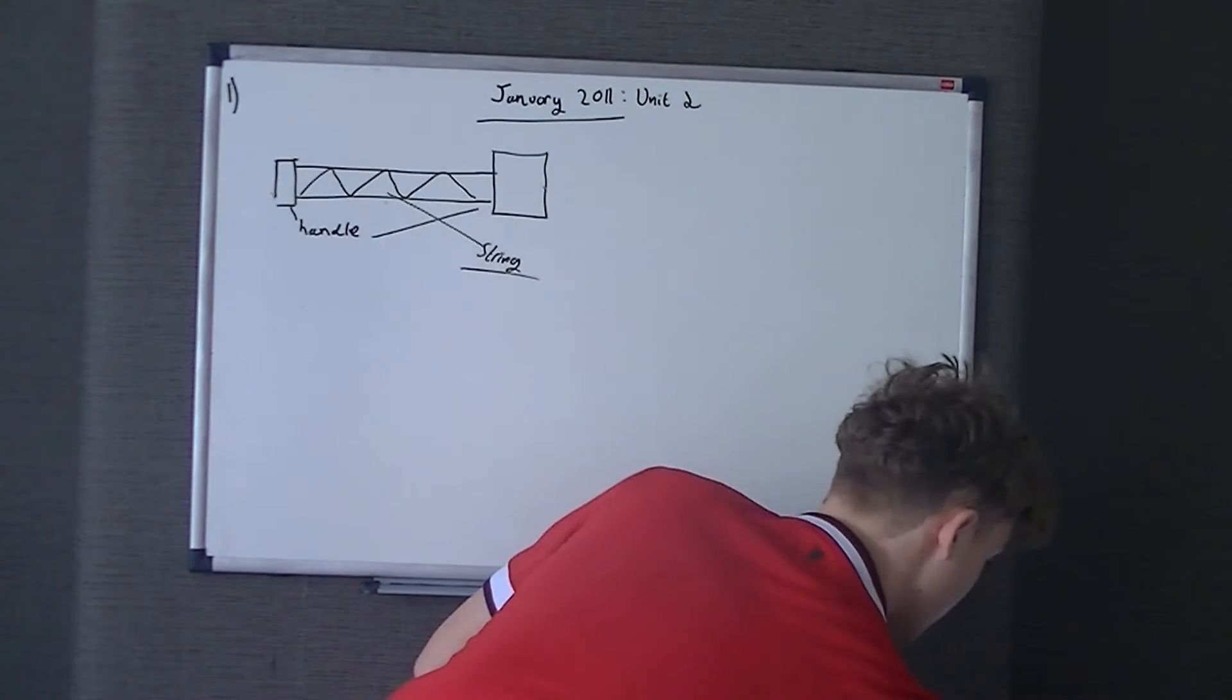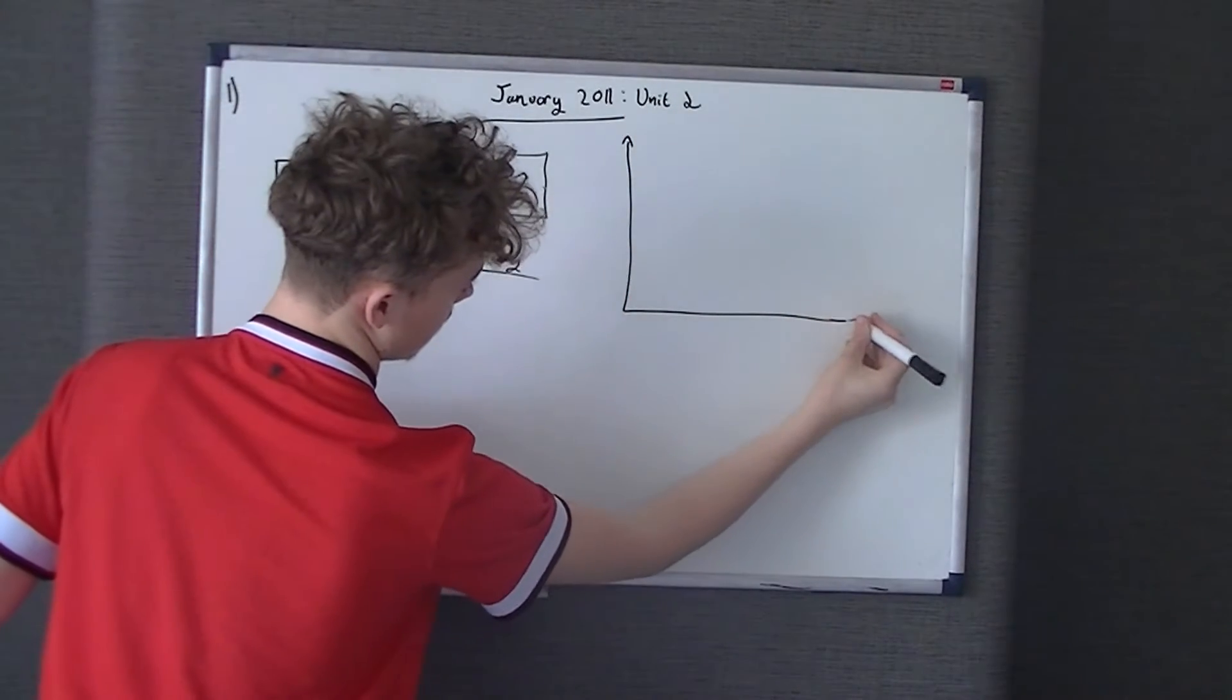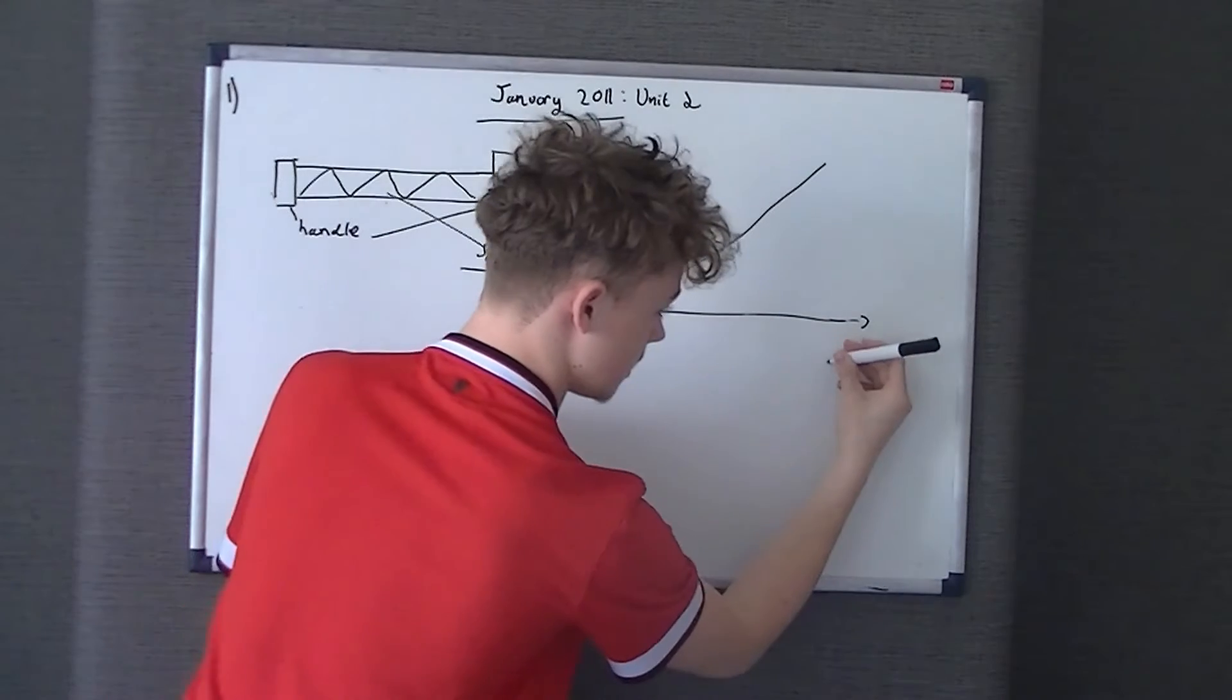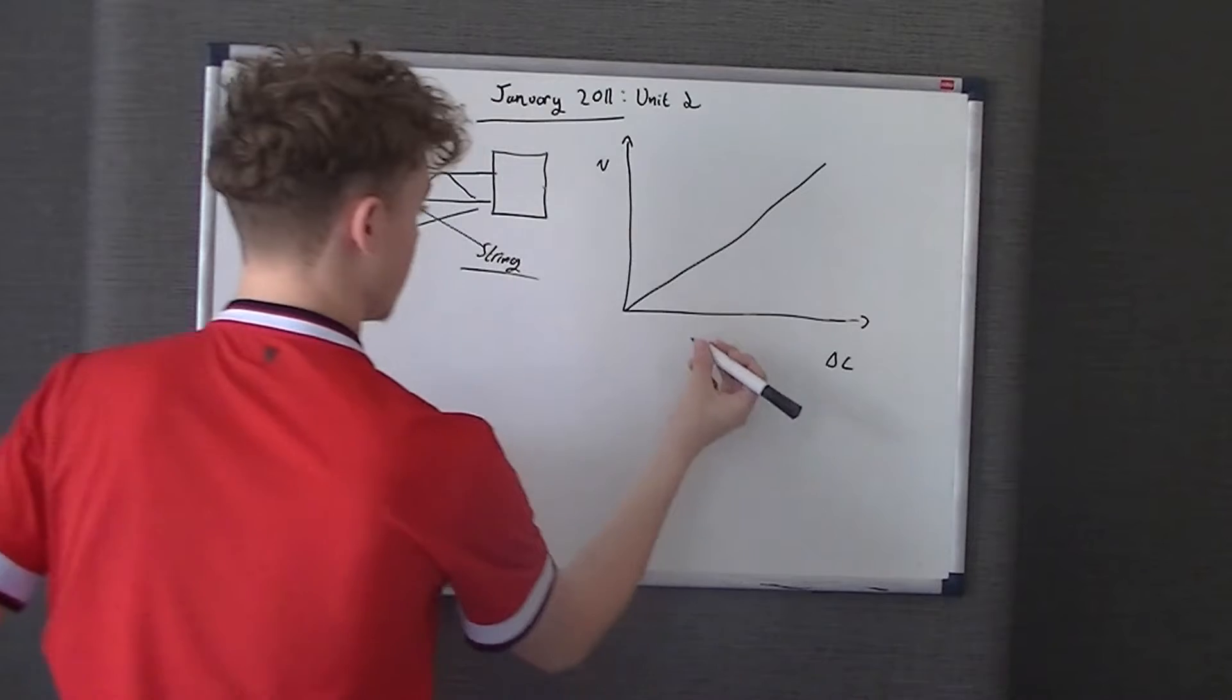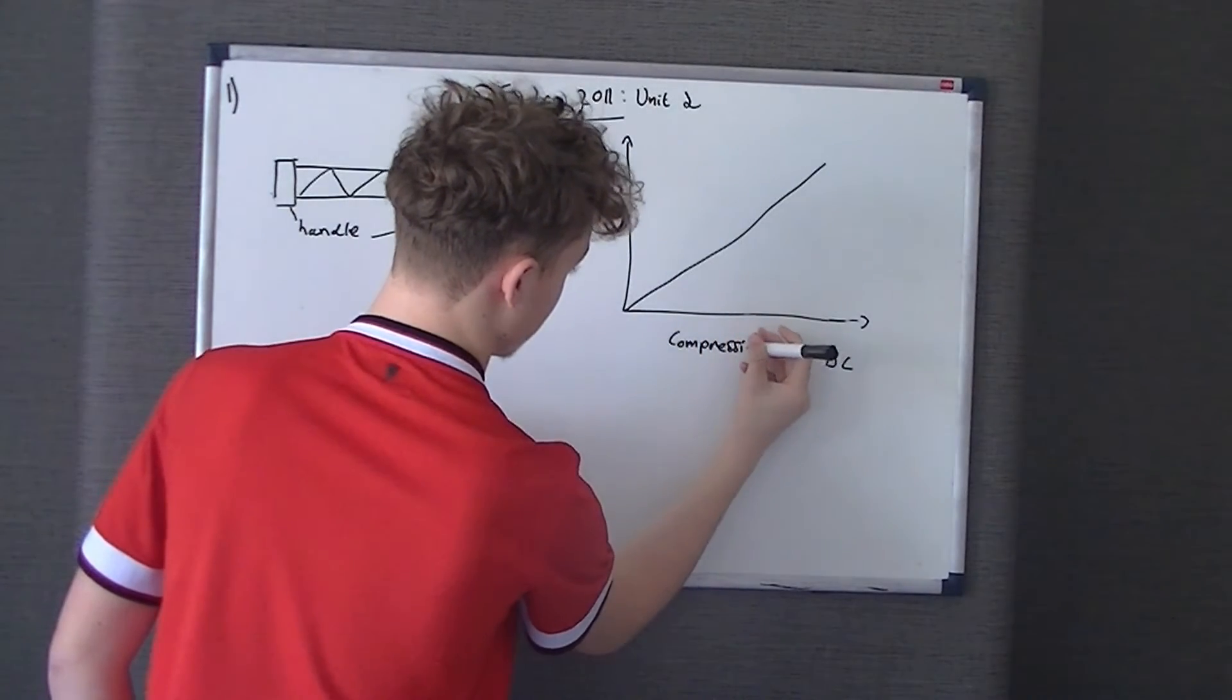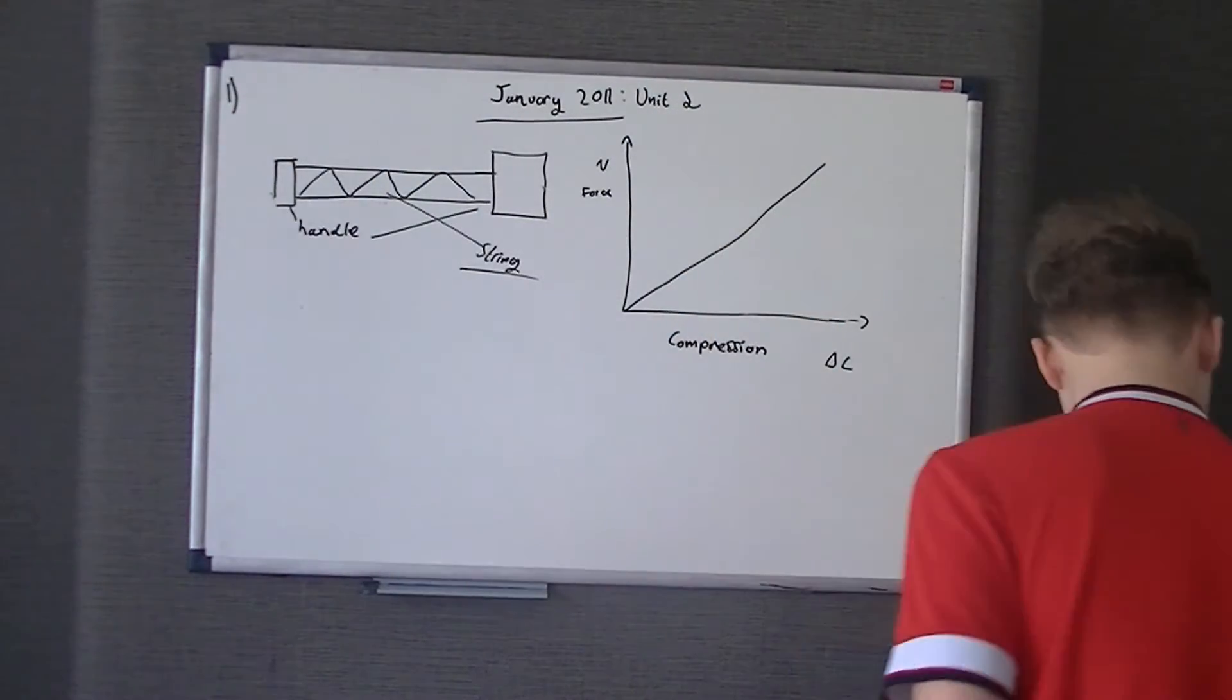And these are two handles here. So you've got a handle and another one. And this is some kind of string in the middle that you pull apart. And obviously being physics, the string is what we're interested in. Now for part 1A, it's got some kind of graph as well. I'll just draw a quick sketch of it.